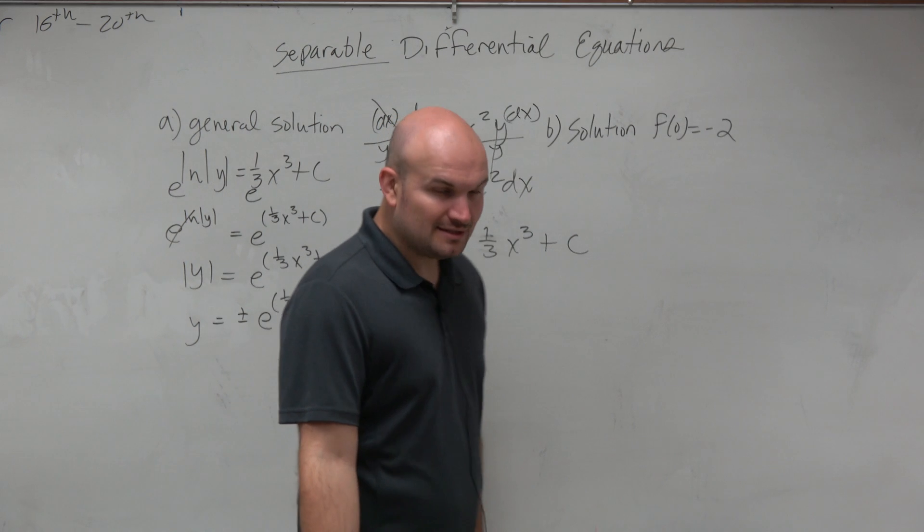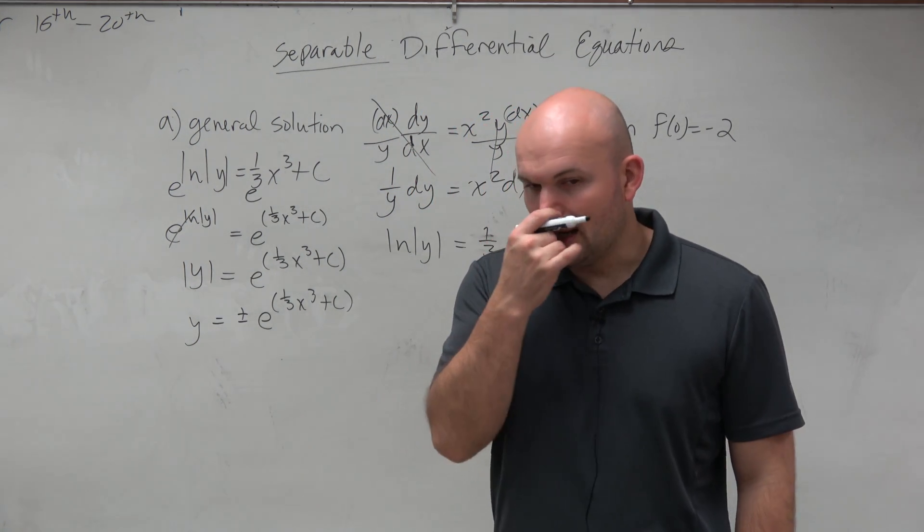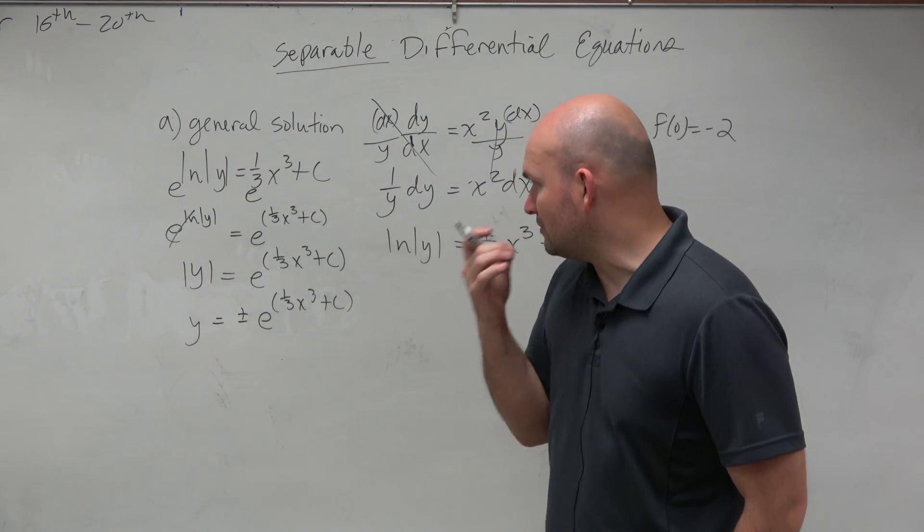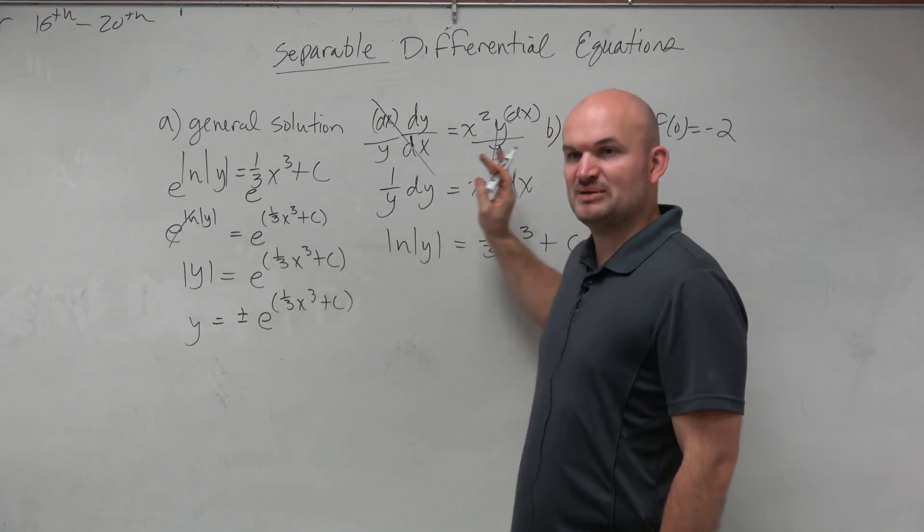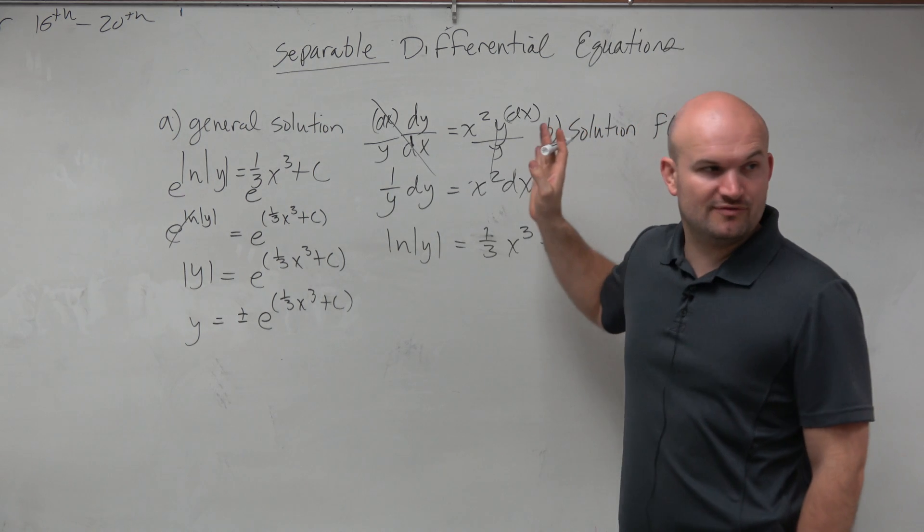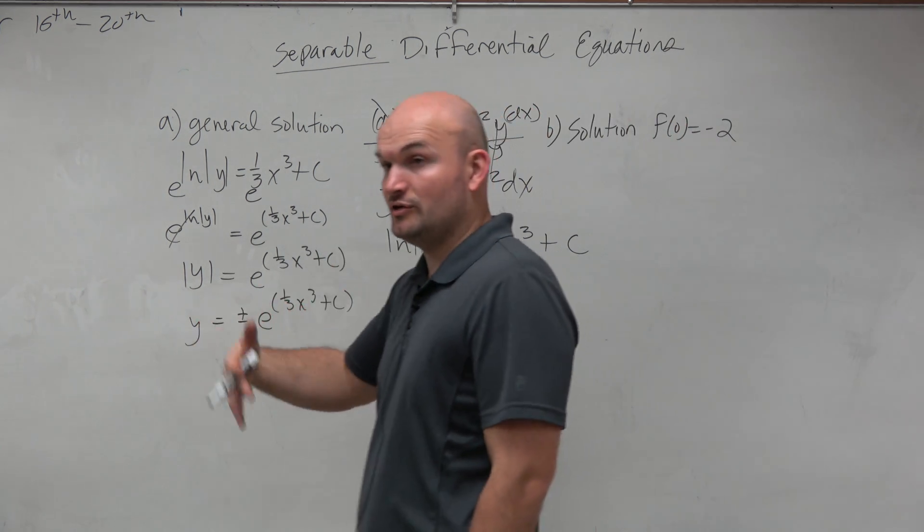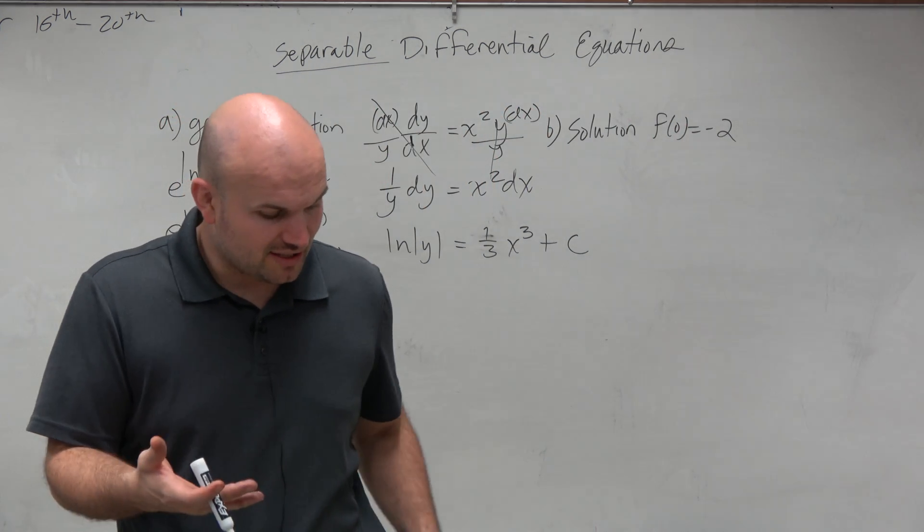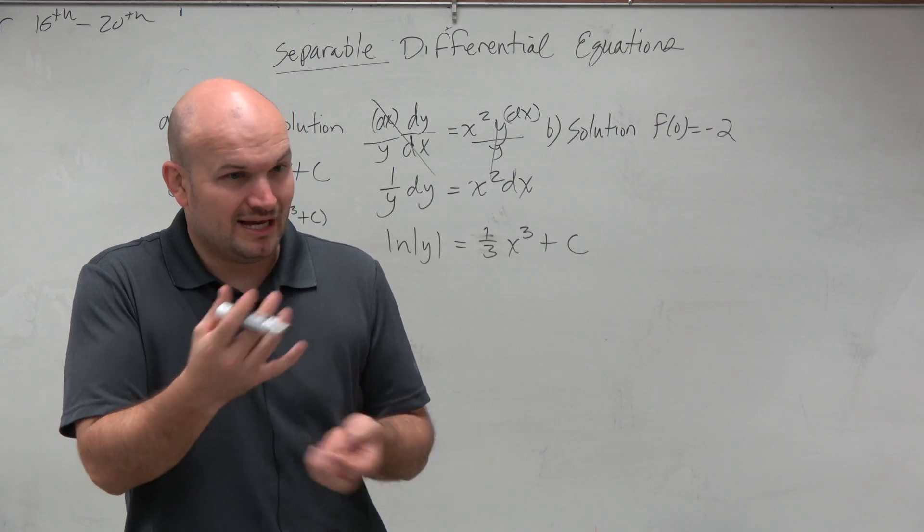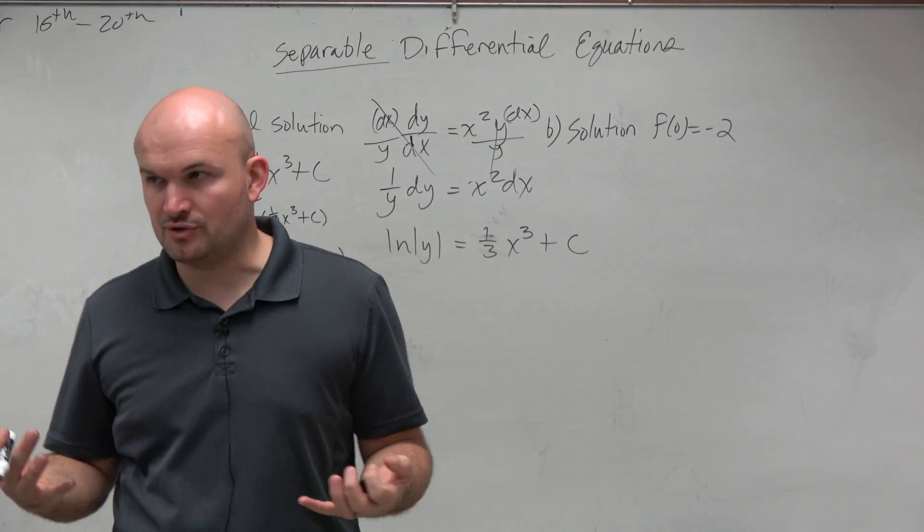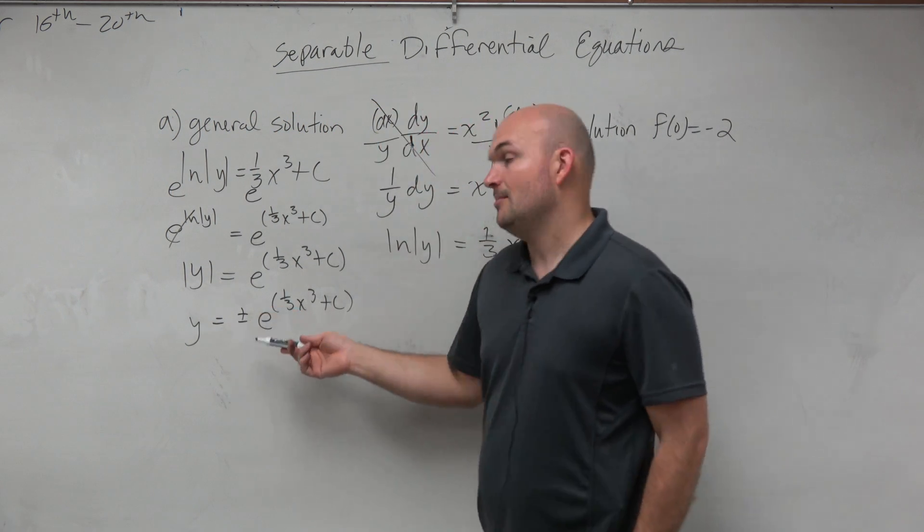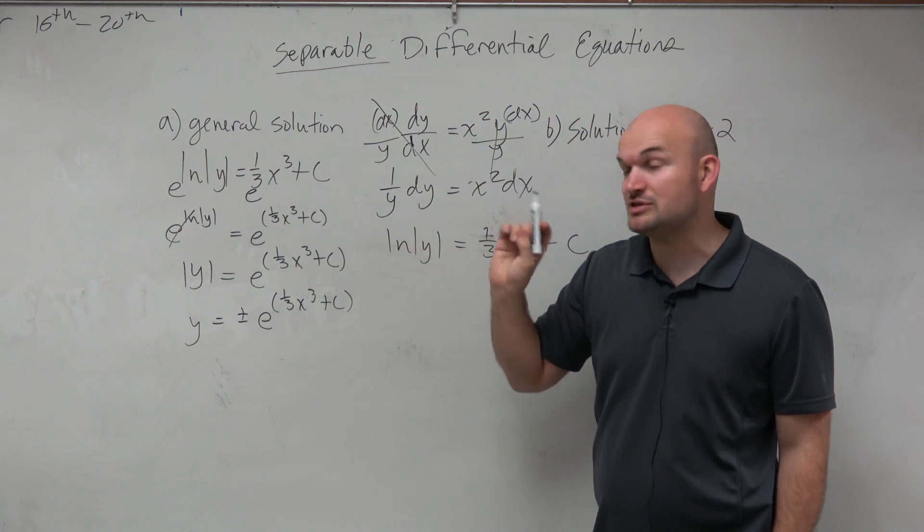And that's fine for a general solution, because we don't technically have value of c. Like, that's OK. But when we're trying to do a particular solution, it's not really preferred. We can do it that way. You could plug it in. But the only problem is you're going to have to plug it into both of them. And you're going to have to determine if it's a plus or minus. And it's just not really a good way to go about the problem.